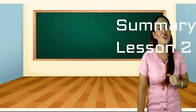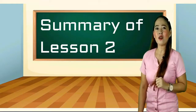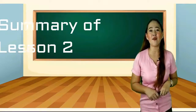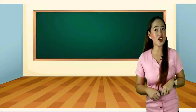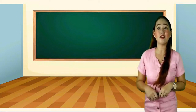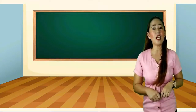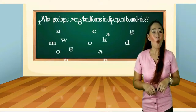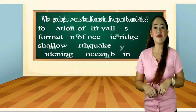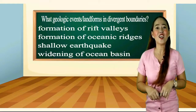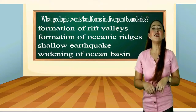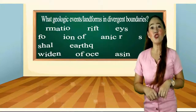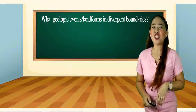Before moving on to Lesson 3, let us have a short recap on the different landforms produced on divergent plate boundaries. The geologic events and landformations that take place include: the formation of rift valleys and oceanic ridges, the occurrence of shallow earthquakes, and the widening of the ocean basin after long years.